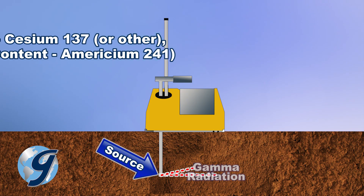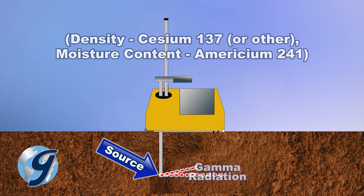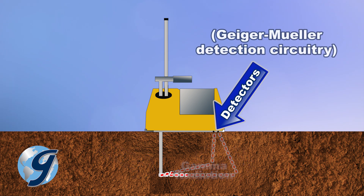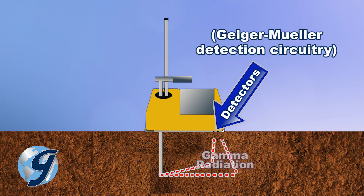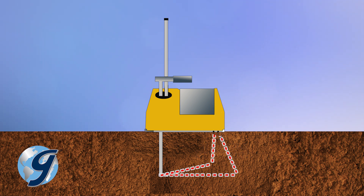The nuclear density test method measures soil density using a nuclear density gauge that emits radioactive particles and a detector that receives the particles that are either reflected by the test material or pass through it.